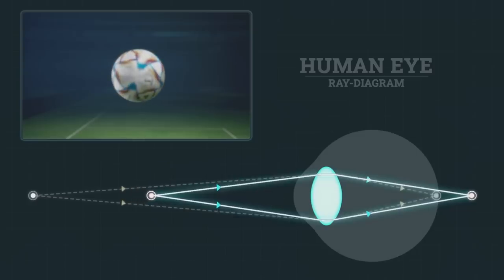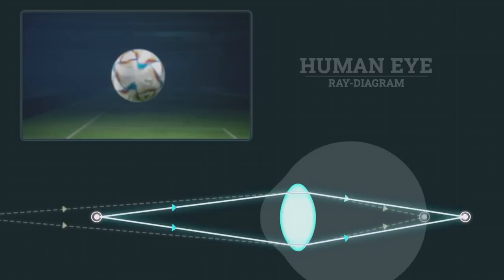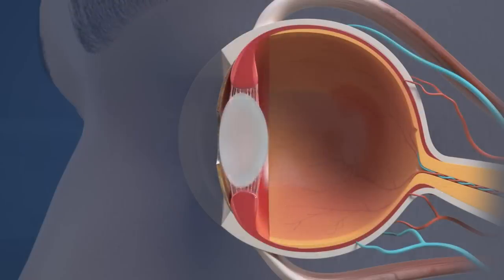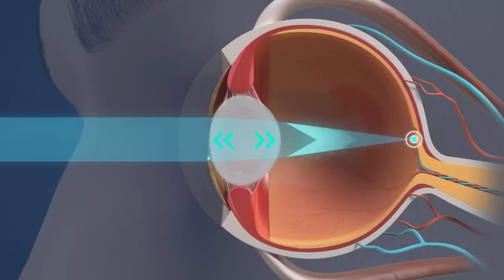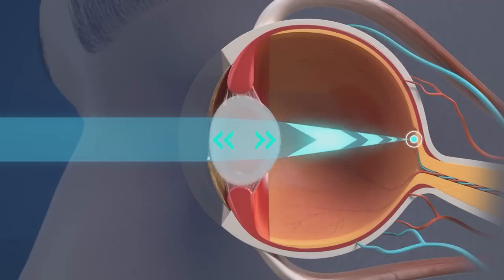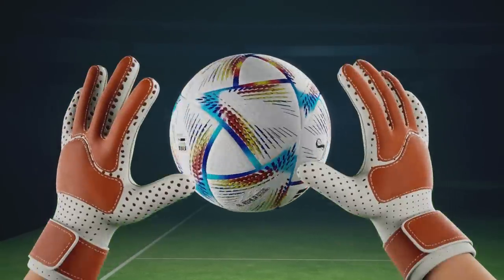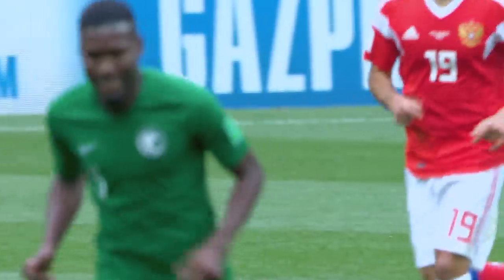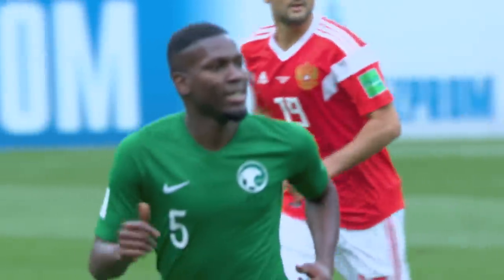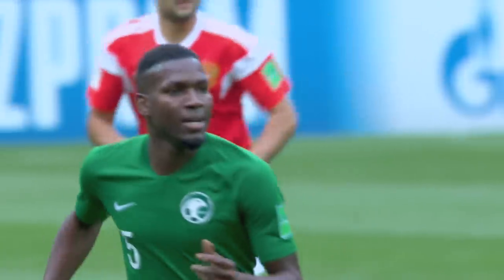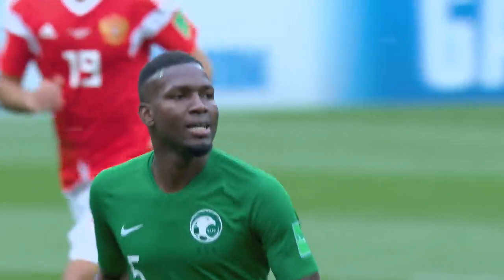Now, as this point source comes closer and closer, if the lens remains as it is, the light rays won't stay converged on the retina, making the ball look blurry. But here's the beauty of the ciliary muscle — they contract, making the lens thicker, increasing the converging power of the lens and accommodating vision.